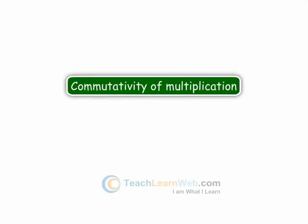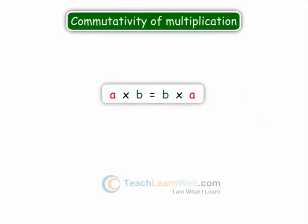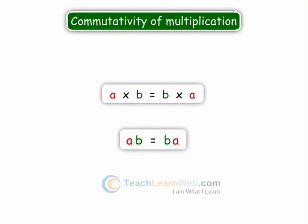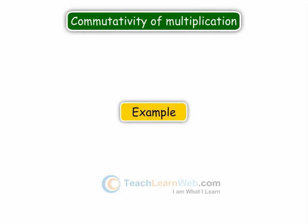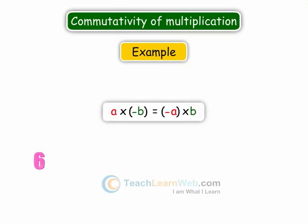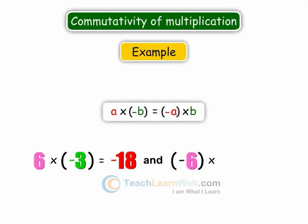Commutativity of Multiplication. We know that multiplication is commutative for whole numbers. Can you say multiplication is also commutative for integers? Come, let us see an example for this. 6 into minus 3 is equal to minus 18, and minus 6 into 3 is equal to minus 18. So we can say that multiplication is commutative for integers also.